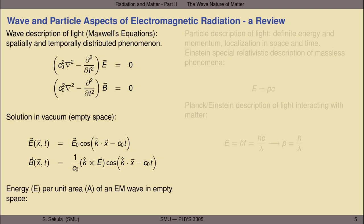There's an energy per unit area of an electromagnetic wave in empty space. There's no one place where the energy is concentrated. One can think about the energy density or energy per unit area of a traveling electromagnetic wave. The particle description of light, which emerged from evidence based on the blackbody radiation spectrum and the photoelectric effect, describes something with definite energy and definite momentum at a definite location in space and time. That's what a particle is: a localized phenomenon at a very specific place in space-time, whereas a wave is a spread-out distributed phenomenon.